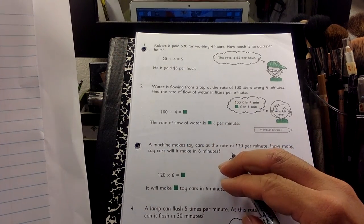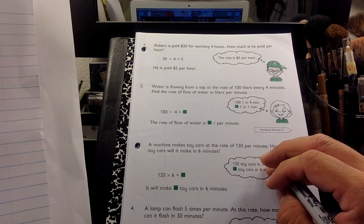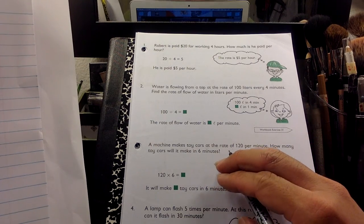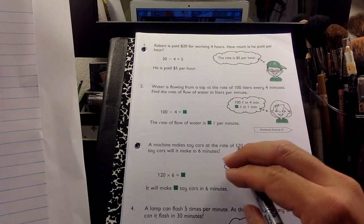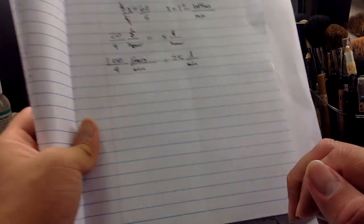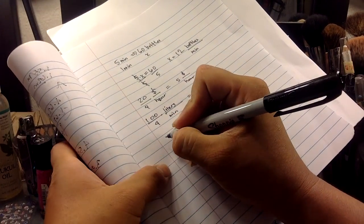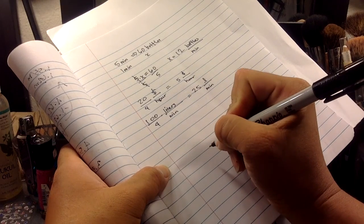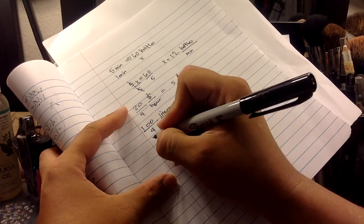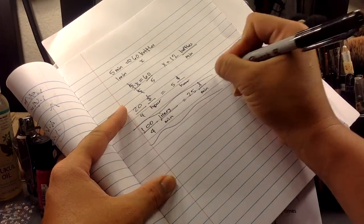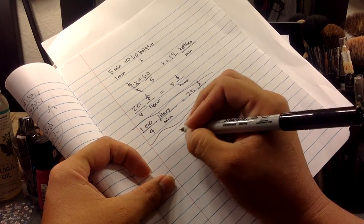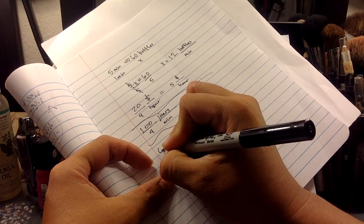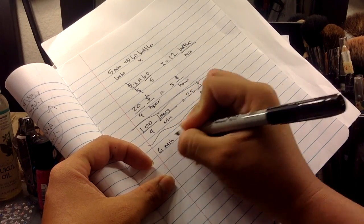A machine makes toy cars at a rate of 120 per minute. So every minute this machine pops out 120. How many toy cars will it make after six minutes? Okay. So if it makes, I think maybe this way, I'm going to start going about teaching you like this. Remember when we were doing conversions, this could be a good conversion. If he has six minutes.